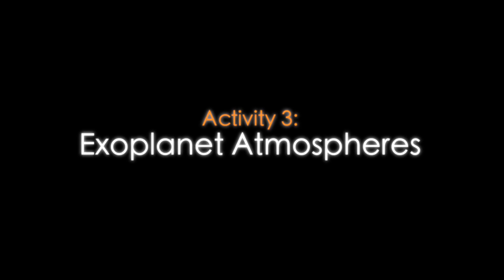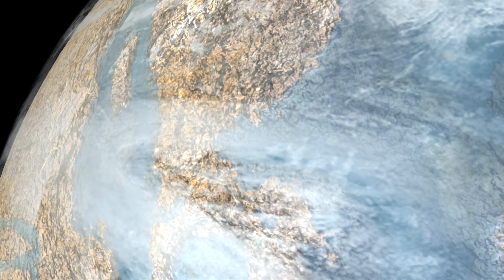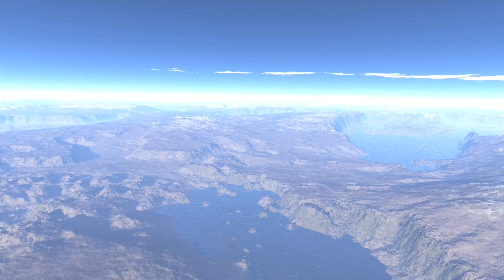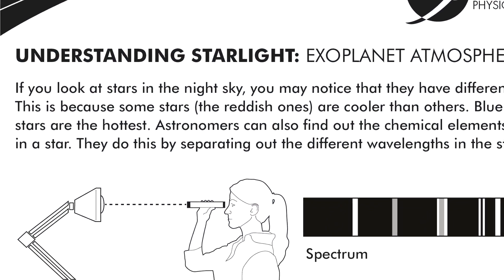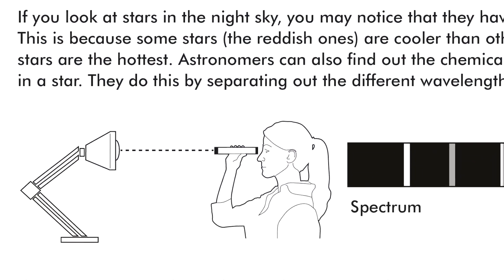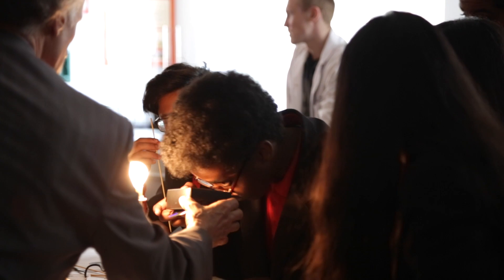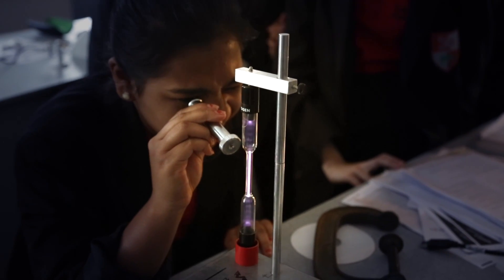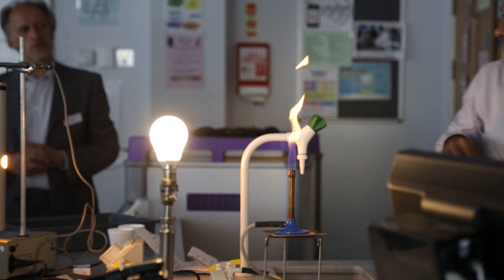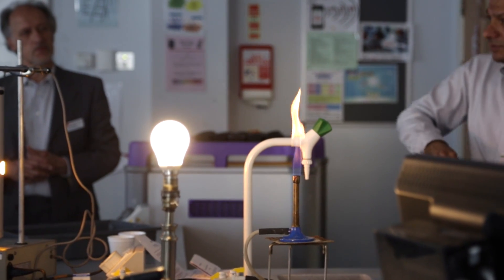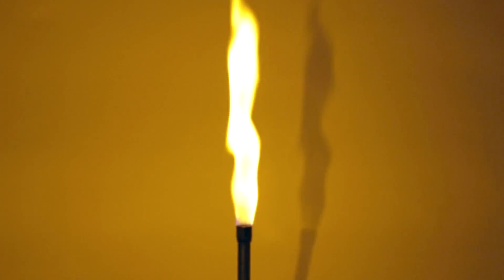In activity 3, students learn about how astronomers can deduce the composition of an exoplanet atmosphere by analysing starlight. They start by observing a number of light sources using a diffraction grating, and then watch a flame demonstration to understand the absorption of light by sodium.